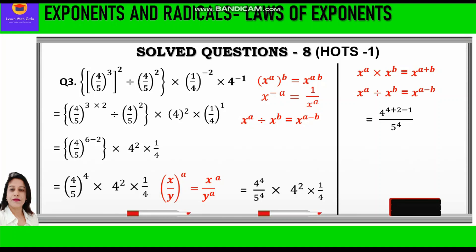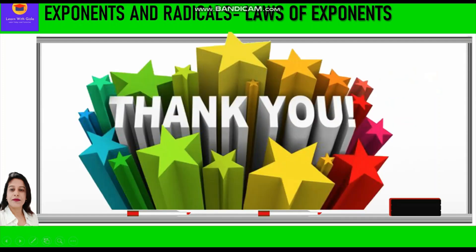We write 4 raised to power 4 plus 2 minus 1, upon 5 raised to power 4. Now 4 plus 2 minus 1 is 5, so we get 4 raised to power 5 upon 5 raised to power 4, which equals 1024 upon 625. So the answer to question 3 is 1024/625. Hope you have understood these questions — thank you everyone.